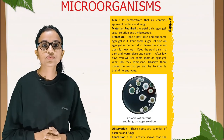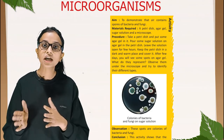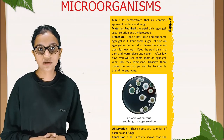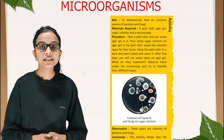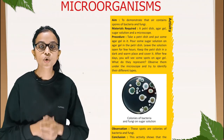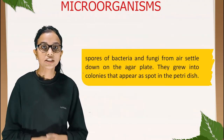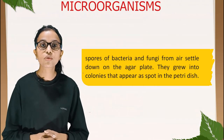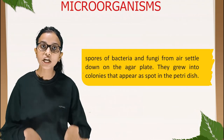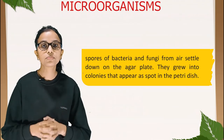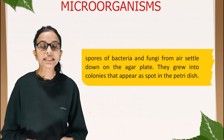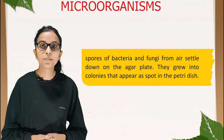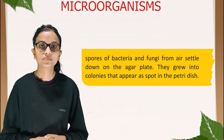Observation: these spots are colonies of bacteria and fungi. Conclusion: this activity shows that the spores of bacteria and fungi from air settle down on the agar plate and grow into colonies that appear as spots in the petri dish.